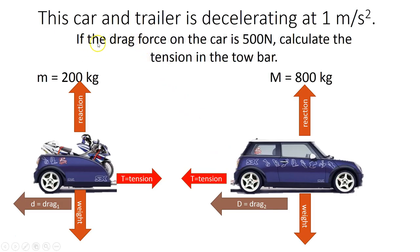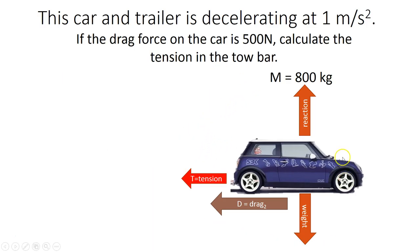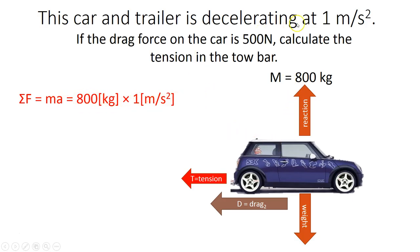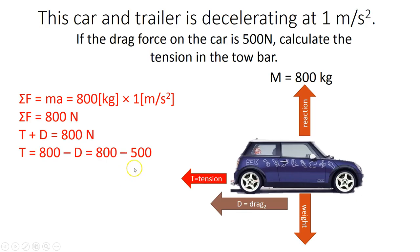If the drag force on the car is 500 newtons — that's capital D — calculate the tension in the tow bar. To do that, I would consider just the forces on the car. I know that the sum of forces, which is mass times acceleration, would be 800 — that's the mass of the car multiplied by the deceleration of the car — so 800 newtons overall acts on the car. That 800 newtons consists of the tension in the cable plus the drag. I'm told that the drag force is 500 newtons, so I can calculate that the tension in the cable is therefore 300 newtons.